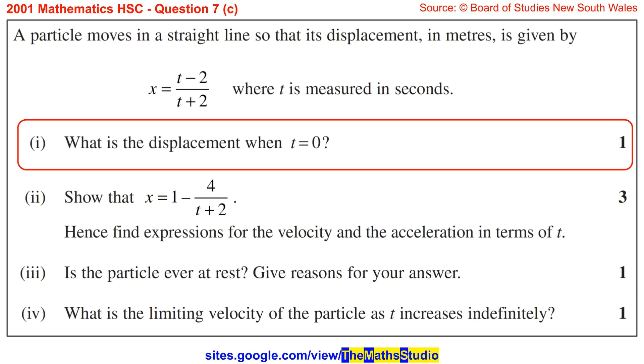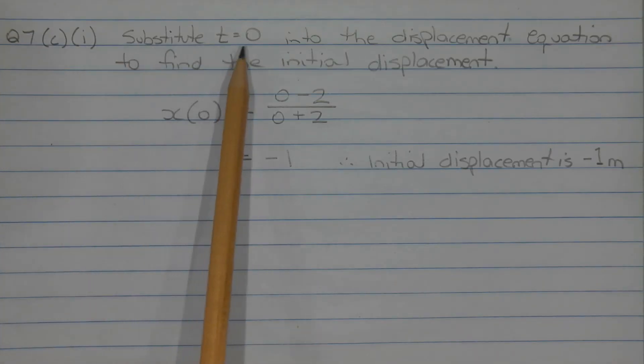Part 1. What is the displacement when t equals 0? Substitute t equals 0 into the displacement equation to find the initial displacement. So x of 0 is equal to 0 minus 2 over 0 plus 2, which equals negative 1. Therefore the initial displacement is negative 1 meters or 1 meter to the left of the origin.